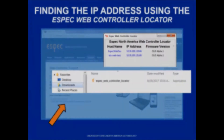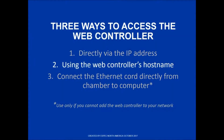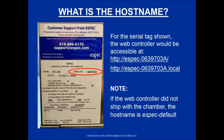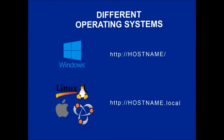The second method is to use the web controller's host name. The host name uses the chamber's serial number that is listed on the serial tag on the side of the chamber. If you purchased the web controller separately, use the SBEC default address shown at the bottom of the screen. The host name format varies based on your operating system and will include a .local for some systems.